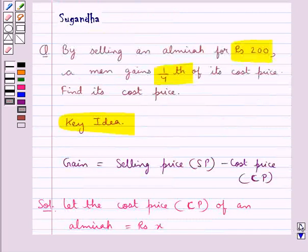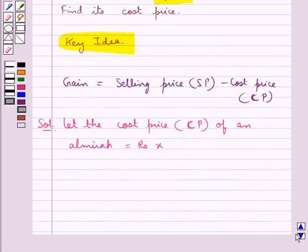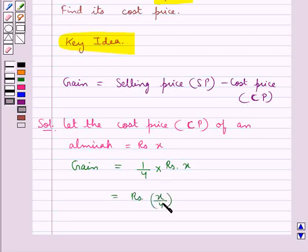Now, in the question it is given that the gain that the man gains by selling the Almira is 1/4th of its cost price. So we have gain is equal to 1/4 into the cost price, that is Rs. X. So this is equal to Rs. X/4.